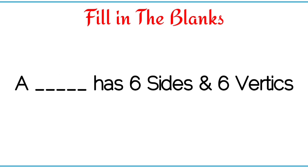A dash has six sides and six vertices. Hexagon — a hexagon has six sides and six vertices.